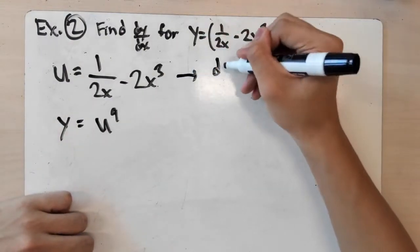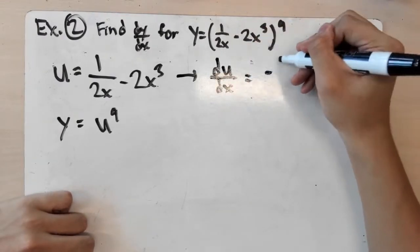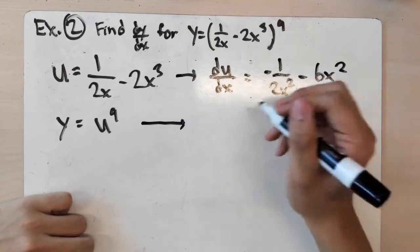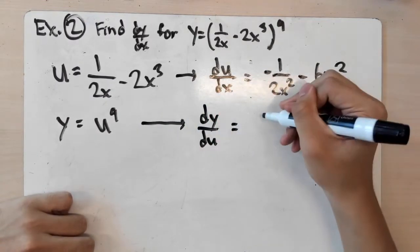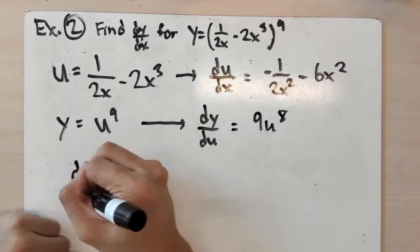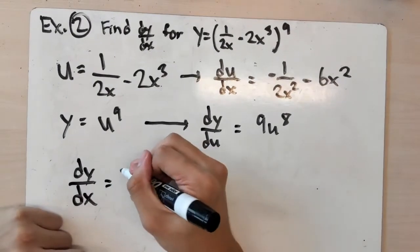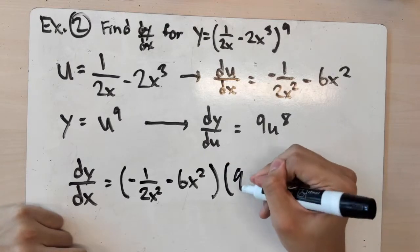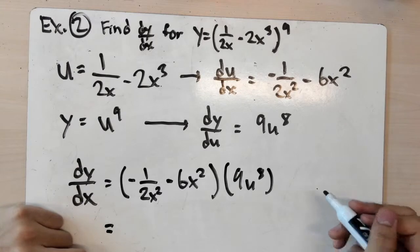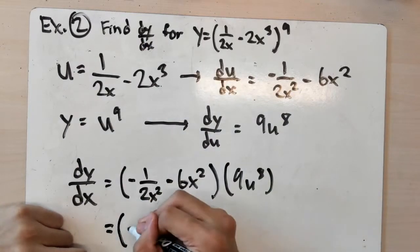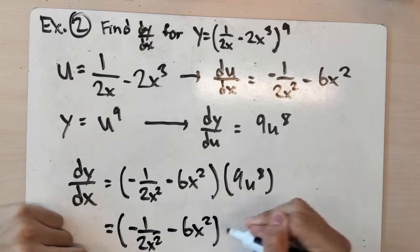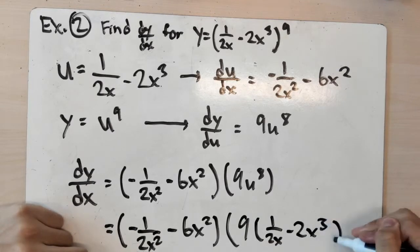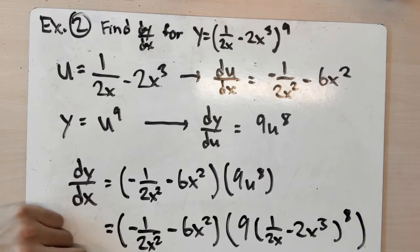We find the derivatives of both smaller functions. du/dx is equal to negative 1 over 2x squared minus 6x squared, while dy/du is equal to 9u to the 8th. By chain rule, we multiply these two: (negative 1 over 2x squared minus 6x squared) times 9u to the 8th. Substituting u back in, we get (negative 1 over 2x squared minus 6x squared) times 9 times (1 over 2x minus 2x cubed) to the 8th power, and with a little tidying up you get the final answer.